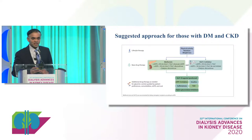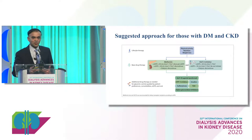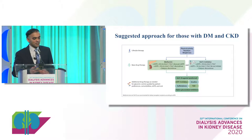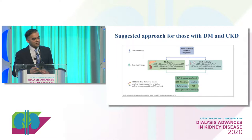This is probably the best figure in the guideline. Lifestyle therapy — physical activity, nutrition, and weight loss — is the foundation upon which everything is built. Metformin can be continued as long as eGFR is over 30 and should definitely be discontinued below 30. SGLT2 inhibitors can definitely be started if eGFR is over 30; if below 30, do not initiate but there is no need to discontinue. If these agents cannot be used, alternate agents are also shown in the figure.